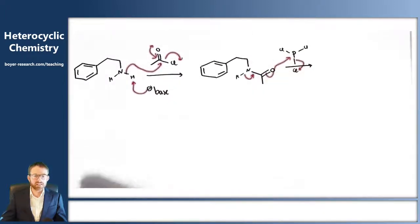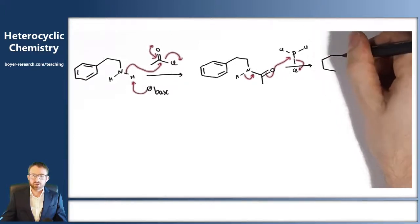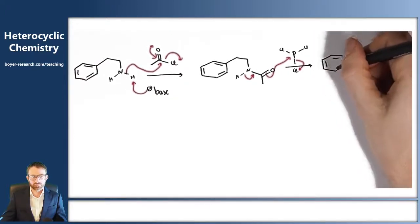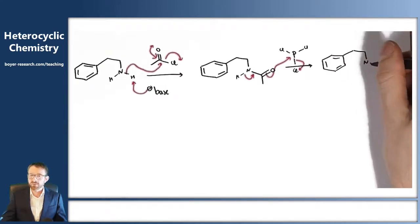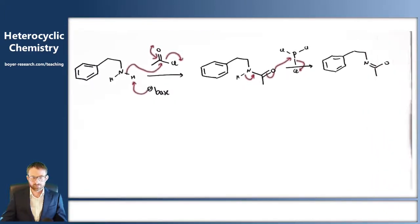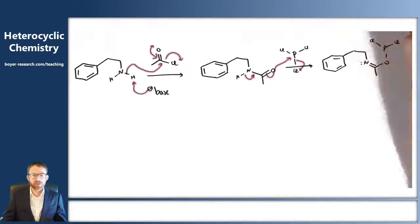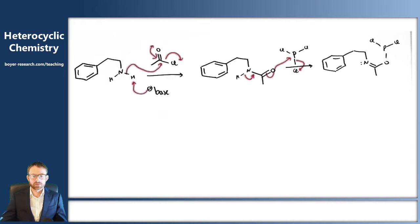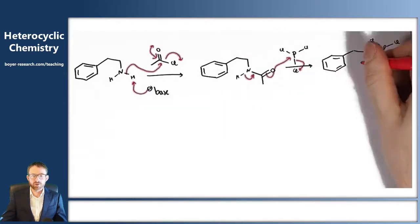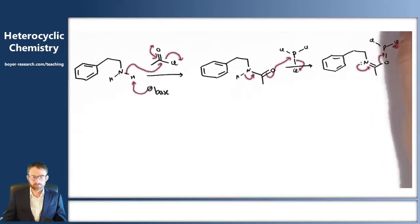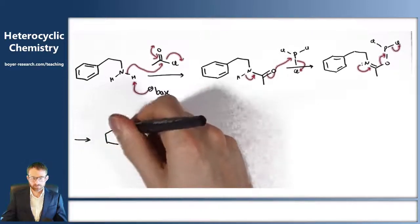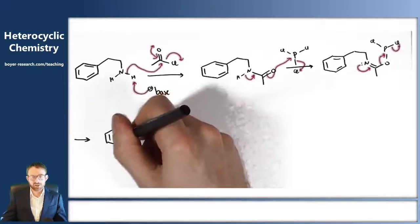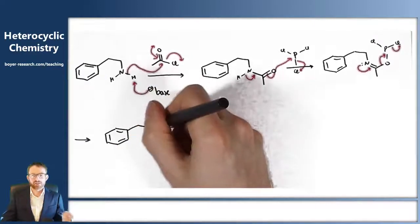We get attack of our amide via the oxygen — that's going to attack the phosphorus and one of our chlorides is going to leave. Our phosphorus is hungry for a phosphorus-oxygen double bond, and we can give it that if we use the lone pair of the nitrogen. That comes in to make a triple bond, break the carbon-oxygen bond and give that phosphorus-oxygen double bond. This gives us our key positively charged electrophile for our electrophilic aromatic substitution.